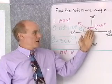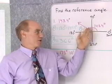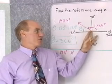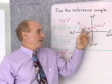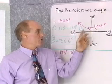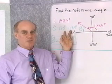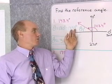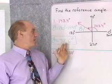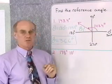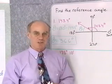This diagram doesn't have to be very accurate — I just want to make sure the terminal side of my angle ends up in the correct quadrant. That gives me a picture so I know in which order to do the subtraction. So 143.4 subtracted from 180 gives a difference of 36.6 degrees — that's the reference angle.